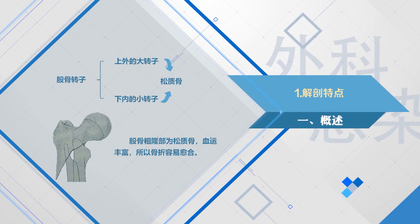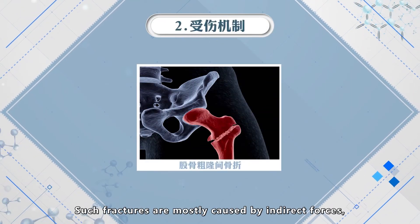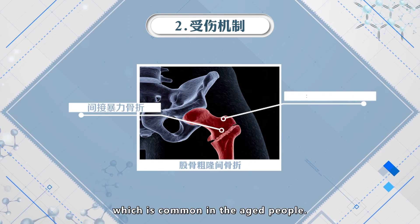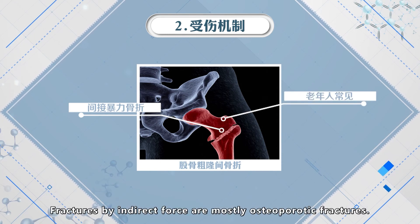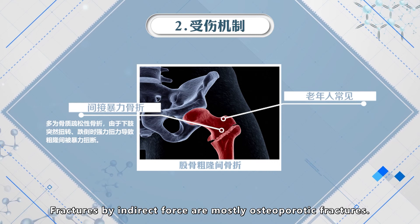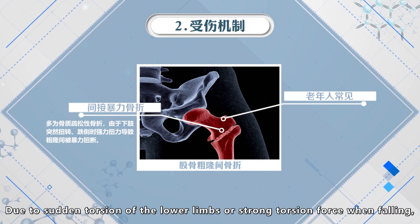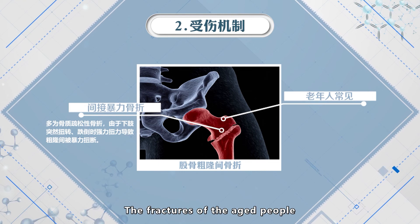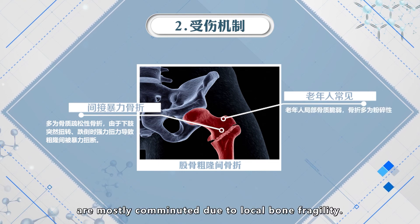The femoral trochanter is a cancellous bone with rich blood supply, so the fracture is easy to heal. Such fractures are mostly caused by indirect forces, which is common in aged people. Fractures by indirect force are mostly osteoporotic fractures due to sudden torsion of the lower limbs or strong torsion force when falling. Fractures in aged people are mostly comminuted due to local bone fragility.